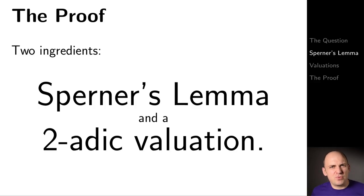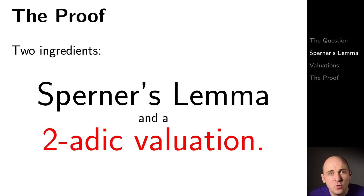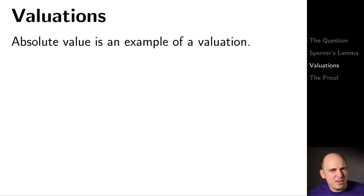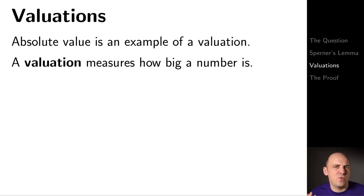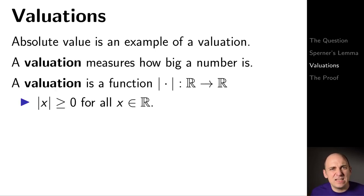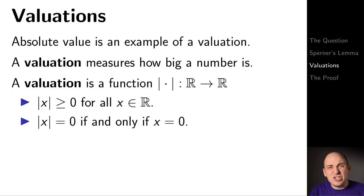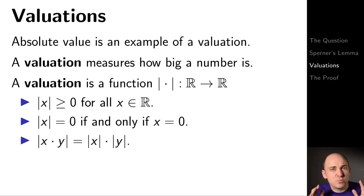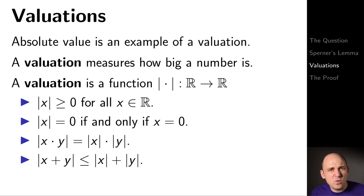We've seen Sperner's Lemma; now let's look at 2-adic valuations. But first, let's talk about valuations in general. Absolute value is an example of a valuation — it's a way of measuring how big a number is. More precisely, a valuation is a function from the real numbers to the real numbers which is non-negative. Zero is the only number with valuation zero, it's multiplicative — the valuation of a product is the product of the valuations — and it satisfies the triangle inequality.